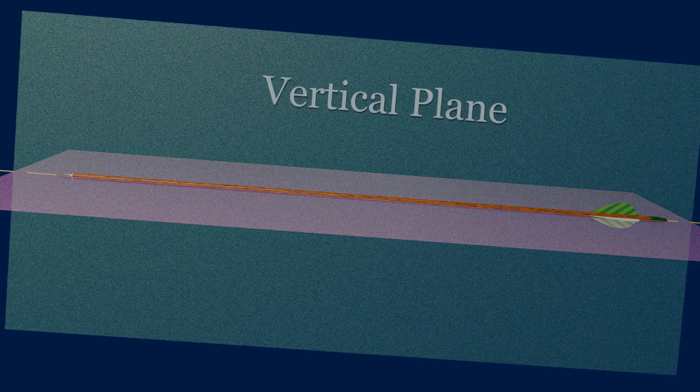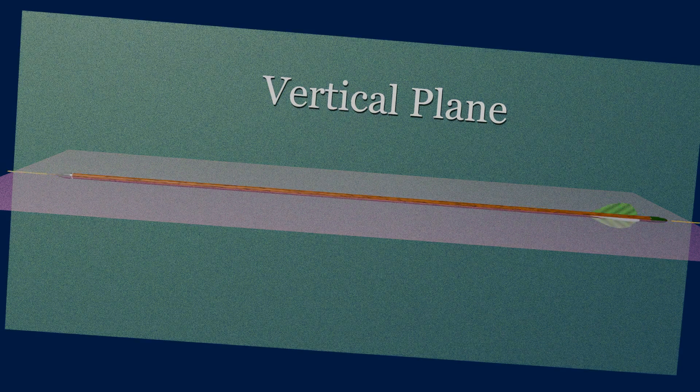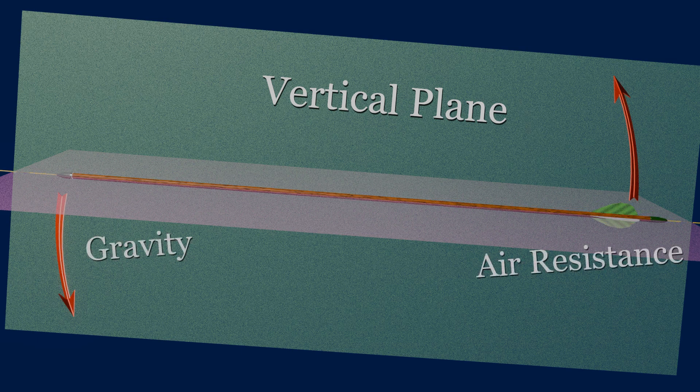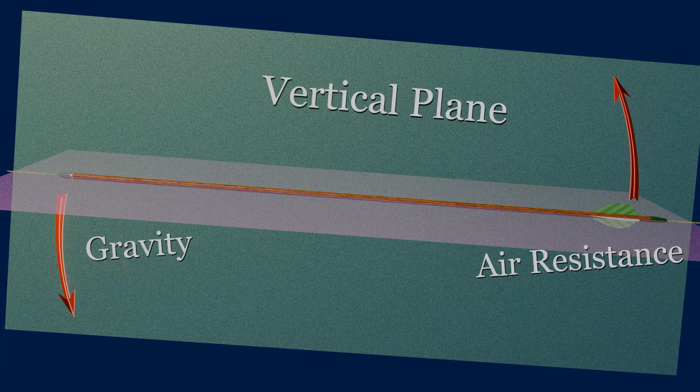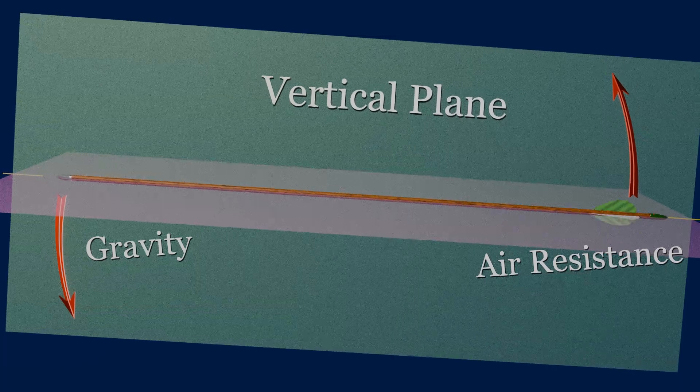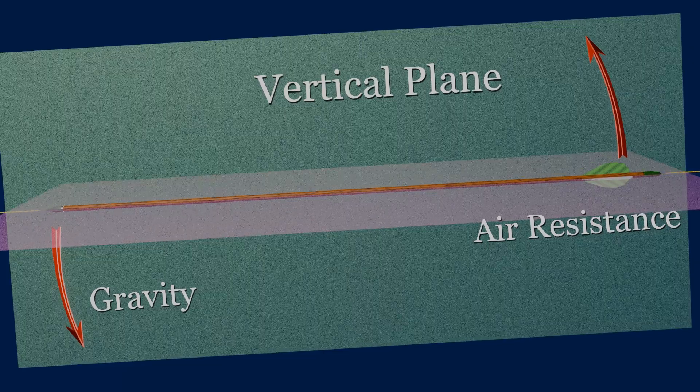When you shoot an arrow, it is initially pointed upwards relative to the target. It rotates downward towards the target, secondary to the force of gravity, the forward center of mass in the arrow, and the air resistance of the fletching. This produces a downward rotating torque on the arrow in the vertical plane.